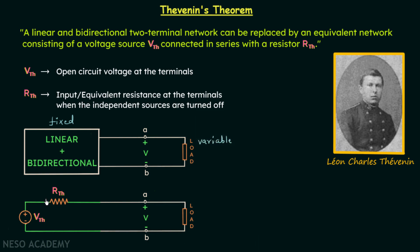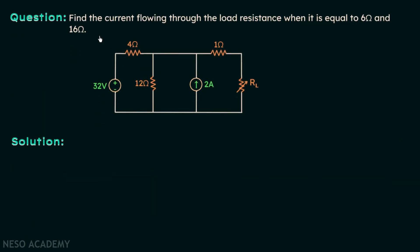The only problem is we don't know how to find VTH and RTH. For this, I have taken one example in which we are required to find the current flowing through the load resistor — which is variable — when it is equal to 6 ohms and when it is equal to 16 ohms. Analyze the given circuit, and then we will move on to the solution. We will first find the Thevenin's equivalent circuit.